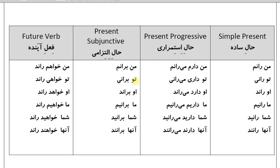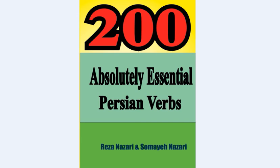حال التزامی (present subjunctive): من برانم، تو برانی، او براند، ما برانیم، شما برانید، آنها برانند. فعل آینده (future tense): من خواهم راند، تو خواهی راند، او خواهد راند، ما خواهیم راند، شما خواهید راند، آنها خواهند راند.